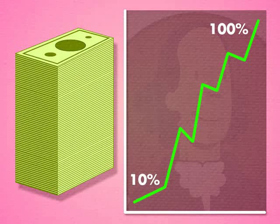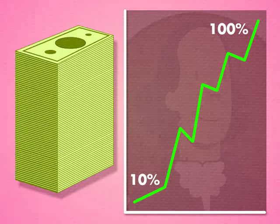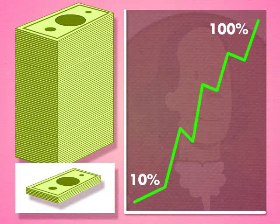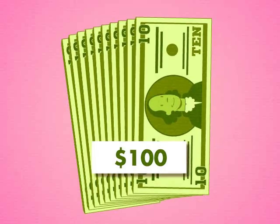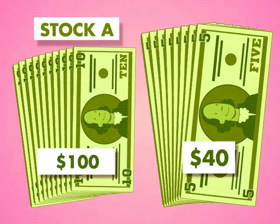The Percent Increase tells how much an amount grows in relation to the original amount. For instance, a person invests $100 in Stock A and $40 in Stock B.